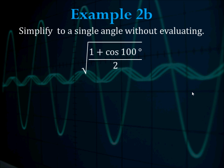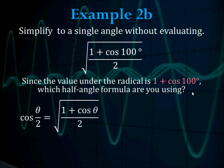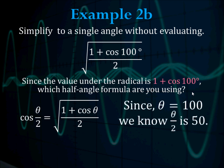Example 2b: simplify to a single angle without evaluating — the square root of (1 plus cosine of 100) divided by 2. You want to identify which half or double angle formula the expression resembles. Since it's 1 plus cosine under the radical, that matches the cosine half angle formula. Cosine of theta over 2 equals the square root of (1 plus cosine theta) over 2. Since theta is 100, theta over 2 is 50, so the answer is the cosine of 50 degrees.